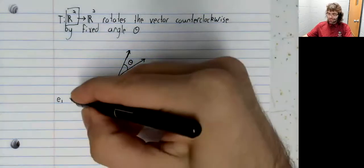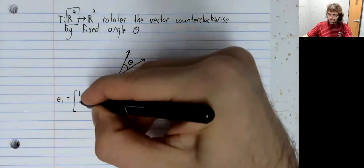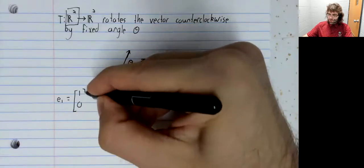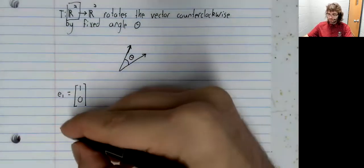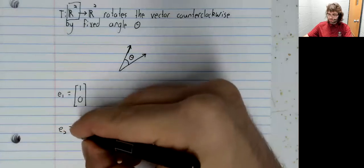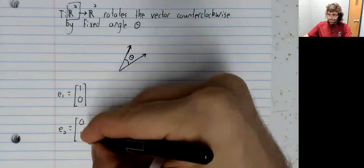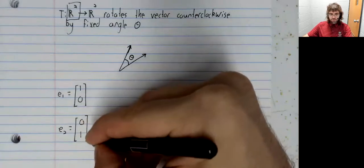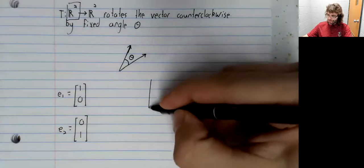Our domain is R2. So we're looking at e sub one equals one zero, and e sub two equals zero one.